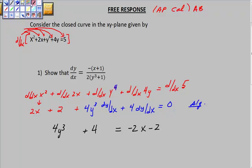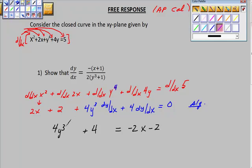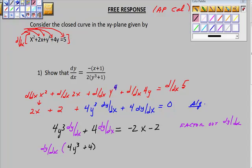And what I wanted to, the reason I'm doing this in a different color right here is because I want to show you what I'm doing here. This should be dy/dx. This is one dy/dx. And this is dy/dx here. Now, factor out that dy/dx. So factor out dy/dx, and we'll get dy/dx times (4y³ + 4) is equal to this -2x - 2.